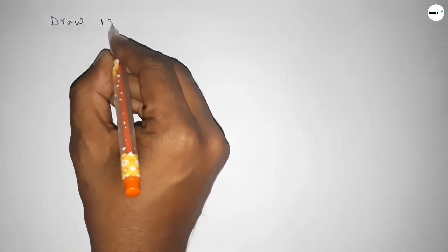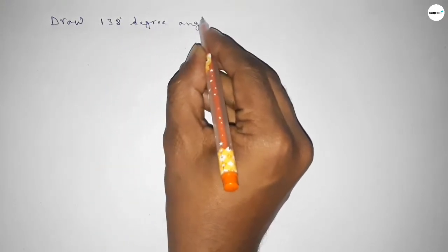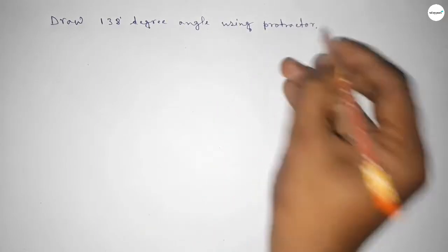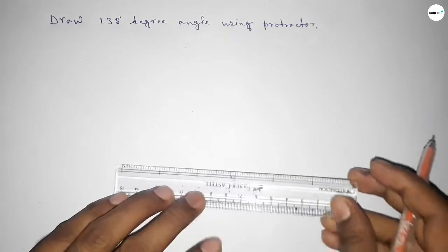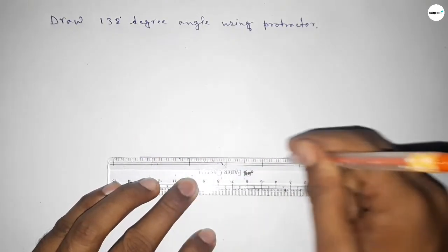Hi everyone, welcome to SSR Classes. Today in this video we have to draw a 138 degree angle by using a protractor. So let's start the video. First of all, we have to draw here a straight line, so first drawing here a line.